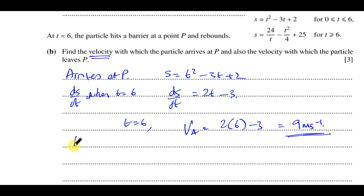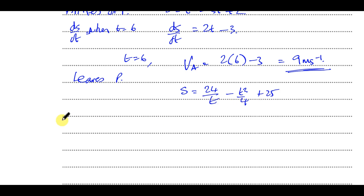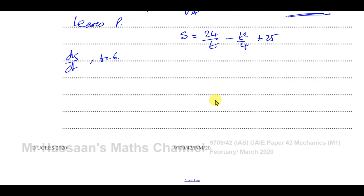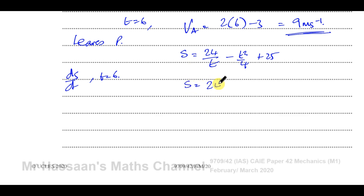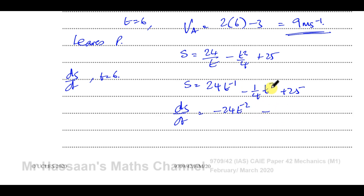Now when the particle leaves P it follows the equation s equals 24 over t minus t squared over 4 plus 25. We need to differentiate this, so we rewrite it as s equals 24 t to the power of minus 1 minus one quarter t squared plus 25. Differentiating gives ds/dt equals negative 24 t to the power of negative 2 minus one half t.